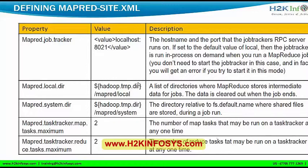The mapred.system.dir property defines the directory for shared files used by different data nodes during job runs. Another important property is mapred.tasktracker.map.tasks.maximum, which defines how many map tasks may run on a task tracker at a single point in time — the default value is 2. Similarly, the reduce tasks maximum property defines how many reduce tasks can run on a single machine, also defaulting to 2. Both values are configurable.